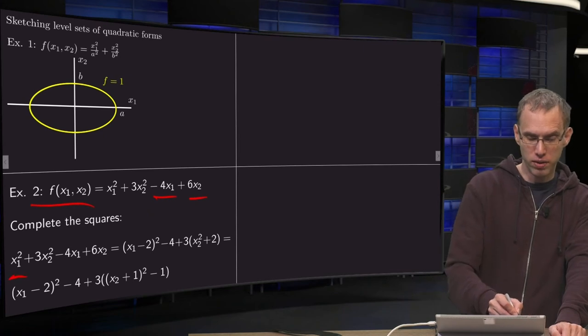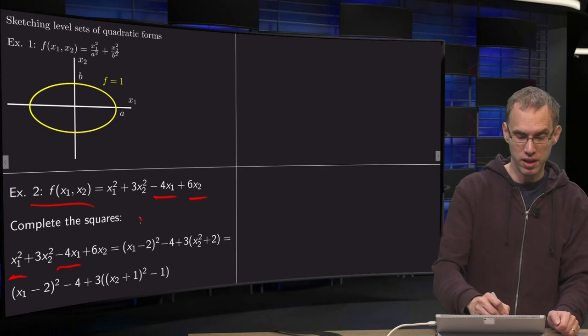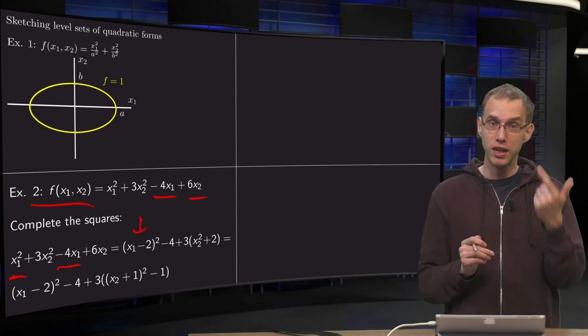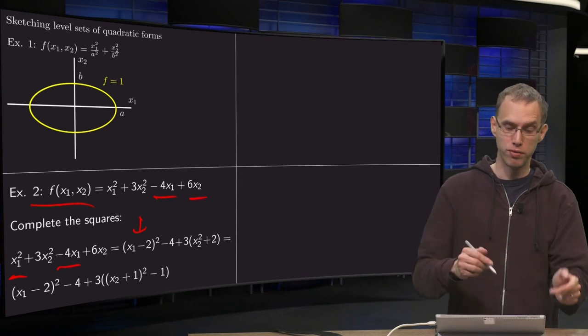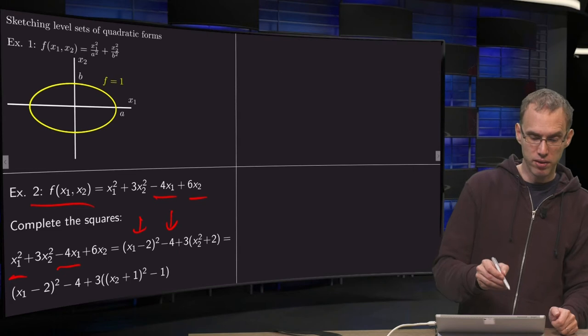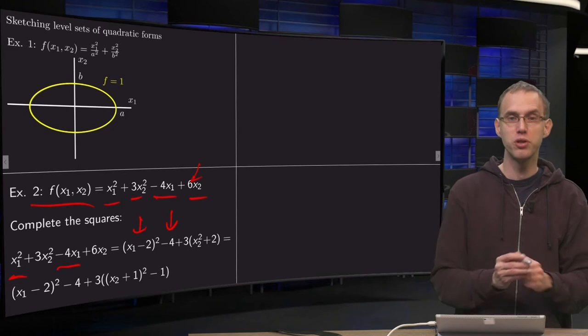So you take the x1 squared minus 4x1 together, complete the squares. So you get (x1 minus 2) squared, well, that would give you x1 squared minus 4x1, which is good, plus 4. So you have to subtract the 4.